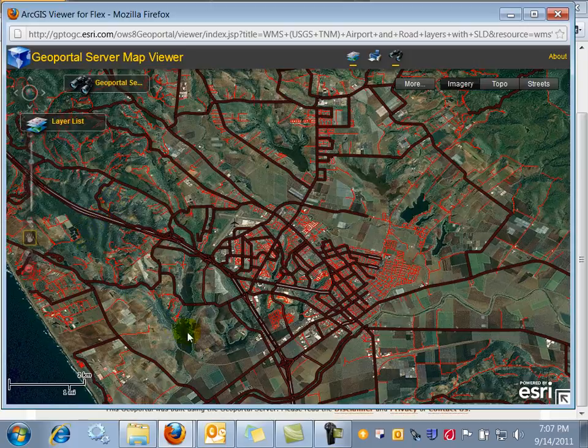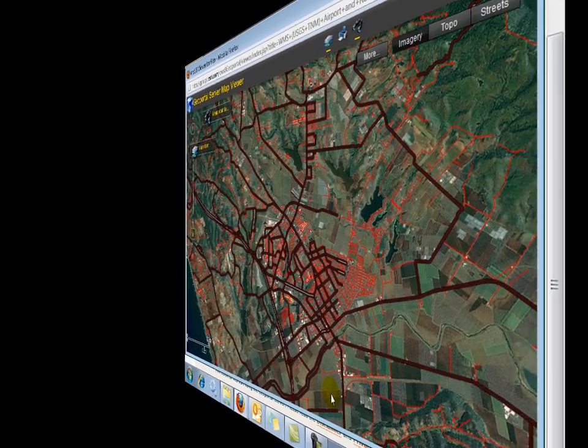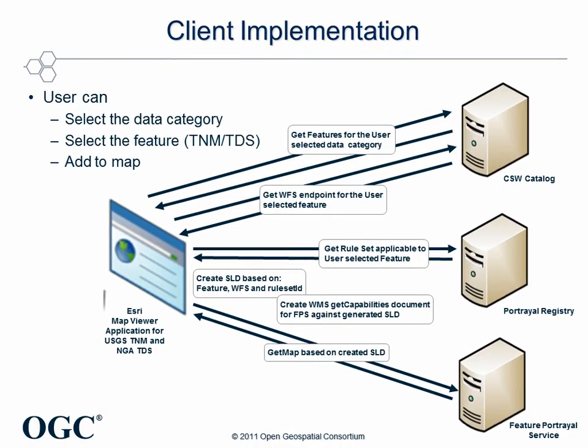At this point the airport operator decides to call the National Guard to coordinate damage assessment. Now let's see what happens behind the scenes. The client application interacts with different service types: it uses the Service Catalog CSW interface to retrieve features based on a user-selected category and the WFS endpoints associated to those features. It also invokes the Portrayal Registry to determine what portrayal rules can be applied against the specific user-selected feature. All this information is used to generate at the client side a styled layer description, which is then used to invoke the getMap request against the Feature Portrayal Service.